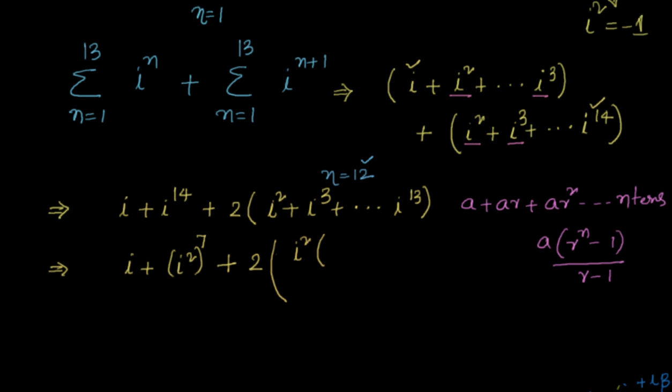So it is nothing but r = i. We know that, and we know n = 12. So can I say i^12 - 1 divided by r - 1, which is equal to i - 1.